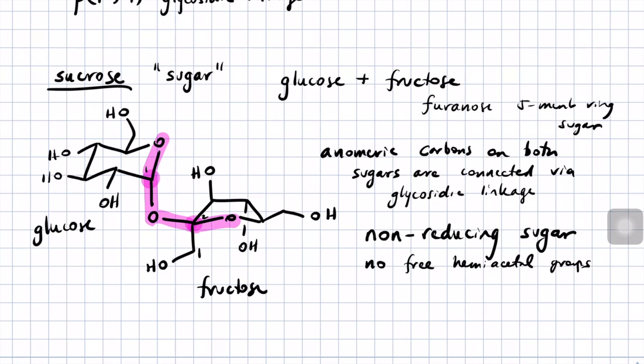Next time we'll talk about what the chemistry and mechanisms are behind converting glucose all the way down to CO₂ and water — how do cells do that? There are two processes: glycolysis and the citric acid cycle. We'll talk about both of them in detail. Until next time, stay safe, stay healthy, and stay organic.